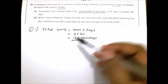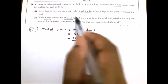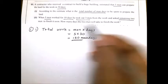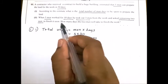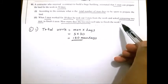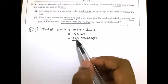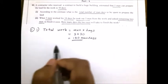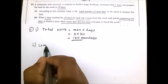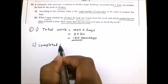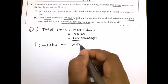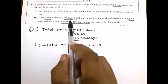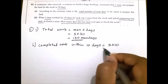Look at the second part. When five men work for 10 days, he took out three men from the work and asked the remaining two men to finish it soon. How many days will two men take to finish the work? This is the total amount of work. If five men work for 10 days, we have to find the completed amount of work. Completed work within 10 days: number of men 5, number of days 10. Five multiplied by 10 equals 50 man-days.